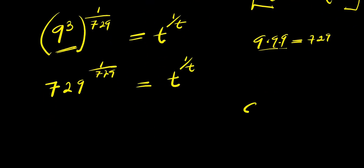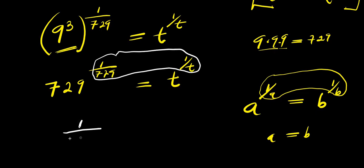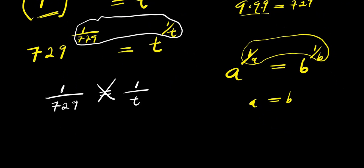So if you have a power 1 over a equals b power 1 over b, then a equals b. We can equate the bases, so we are going to have 1 divided by 729 equals 1 divided by t. Cross multiplying, we have t times 1, that is t, equals 729 times 1, that is 729. So this becomes the value of t — t equals 729.